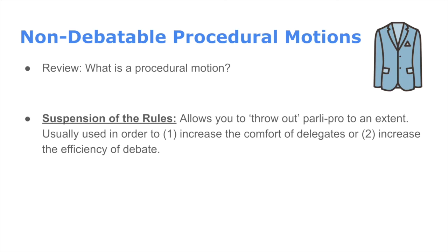The most popular version of this — which most returning delegates think of when they think about suspending the rules, and the reason I have this photo — is that you're actually required under parliamentary procedure to wear a blazer or some sort of overcoat when you're speaking. You can take it off when sitting down, but if you're up there speaking, you have to have a blazer on. Sometimes the air conditioning in Hershey Lodge isn't ideal, and especially in a general assembly with 100 teenagers packed in one space, it can get warm. So someone might motion to suspend the rule requiring the blazer.